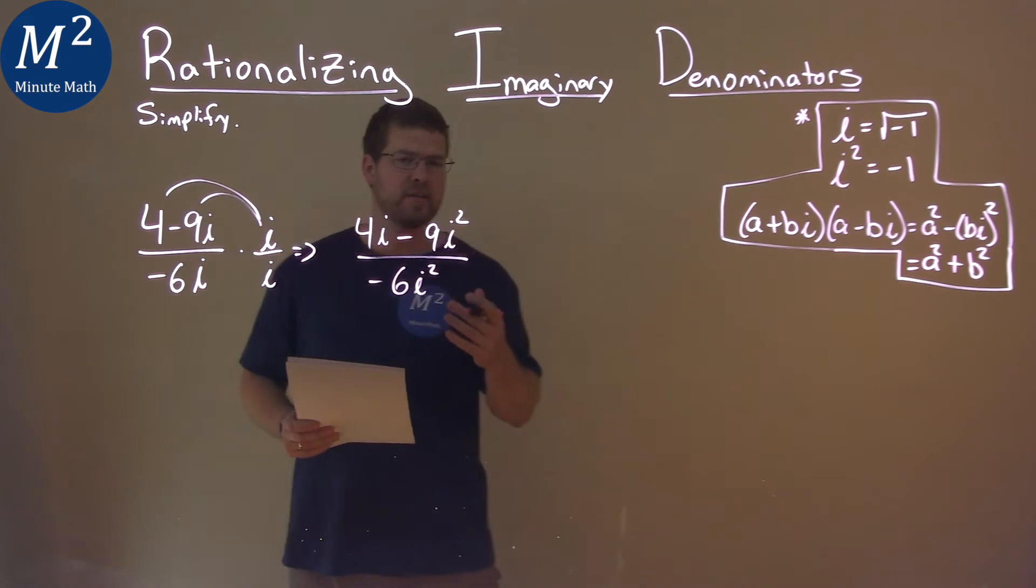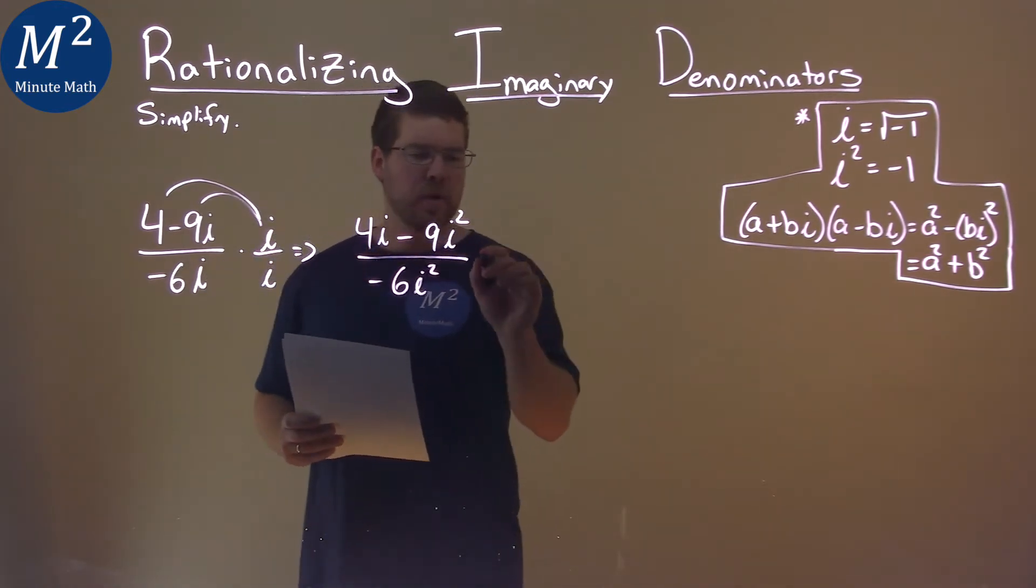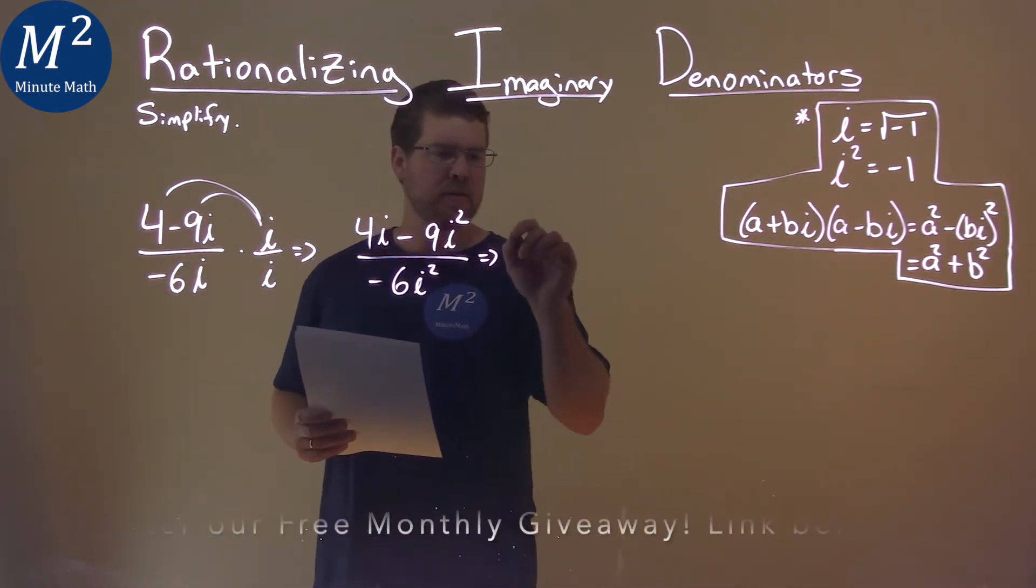But the real thing is, what do we know about i squared? i squared is equal to negative 1, and that was kind of the whole point.